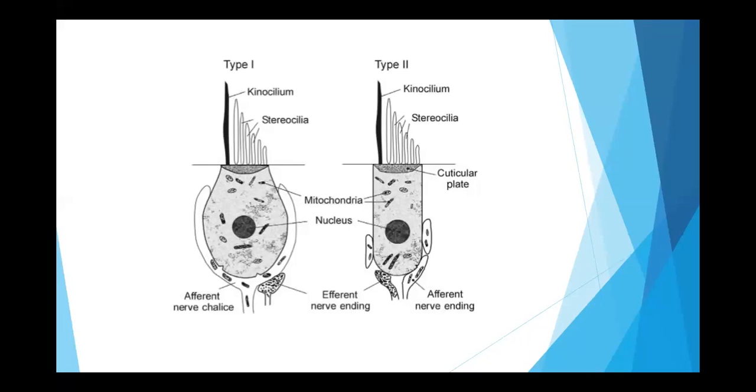The kinocilium is the tallest stereocilium. It's the tallest one. So this is absent in the hearing hair cells and it's present in the vestibular hair cells. That's how we will differentiate the type 1, type 2 fibers between vestibular and the hearing hair cells. Other things are exactly common.